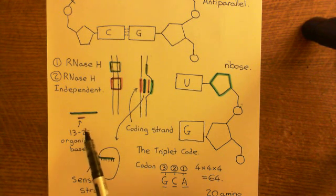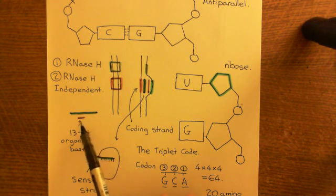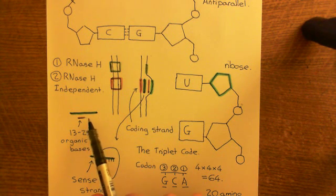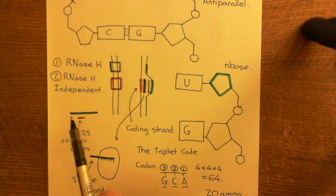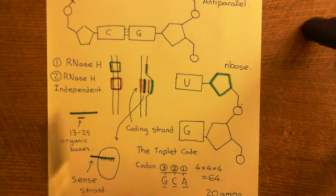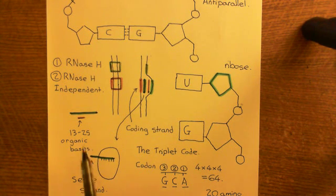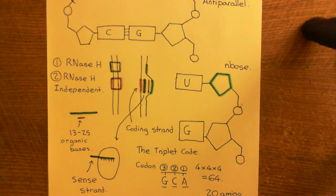This antisense oligonucleotide will then bind to the mRNA when it's just been produced, and this will stop the mRNA being translated either through the activation of the RNase H enzyme, which will start breaking down the mRNA because of it being hybridized with DNA, or through an RNase H independent mechanism. The main idea is that having this double-stranded nucleic acid is going to stop the mRNA from being successfully translated and therefore stop the production of the protein for the gene.